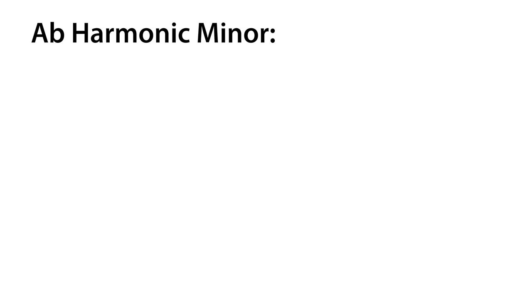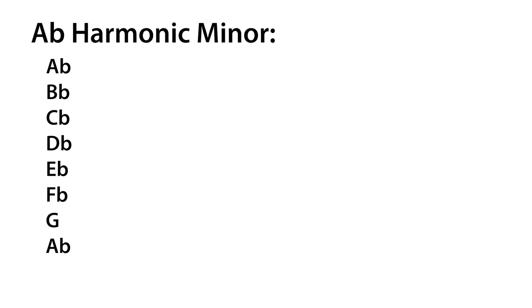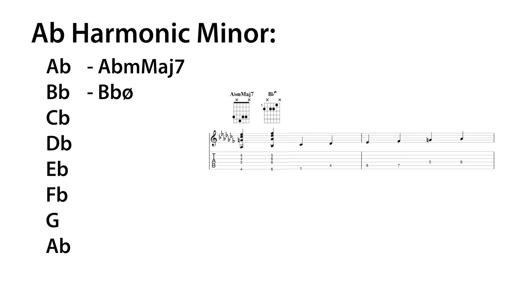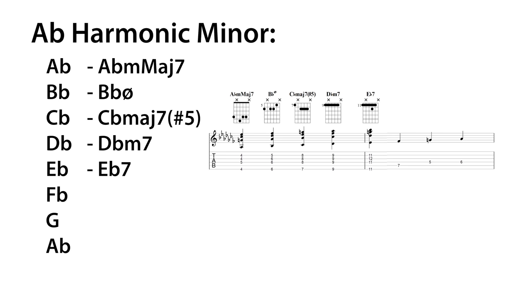Hopefully that's pretty familiar territory. But how does it go if you have to do the same for A-flat harmonic minor? The scale is: A-flat, B-flat, C-flat, D-flat, E-flat, F-flat, G, and A-flat. The chords are: A-flat minor-major seven, B-flat half-diminished, C-flat major seven sharp five, D-flat minor seven, E-flat seven, F-flat major seven, G diminished, and A-flat minor-major seven.